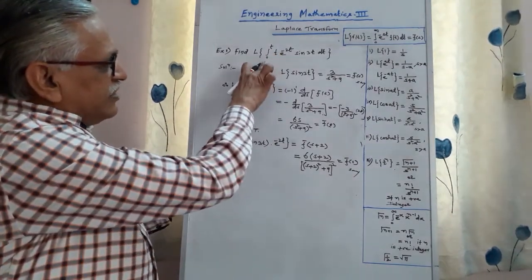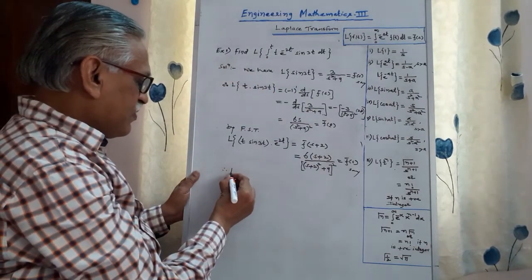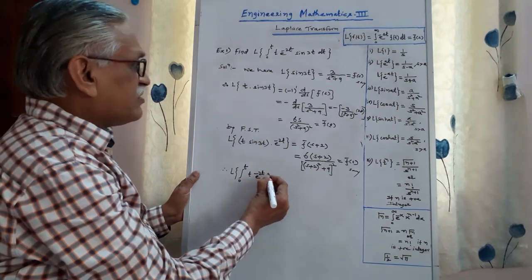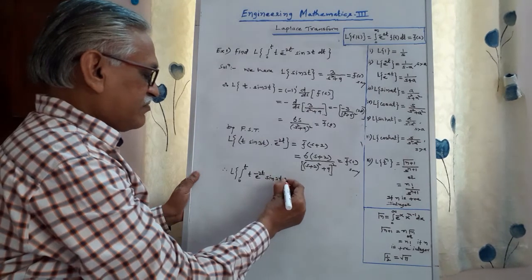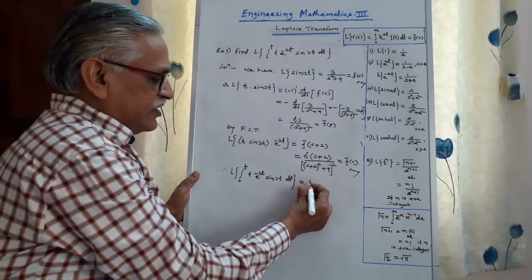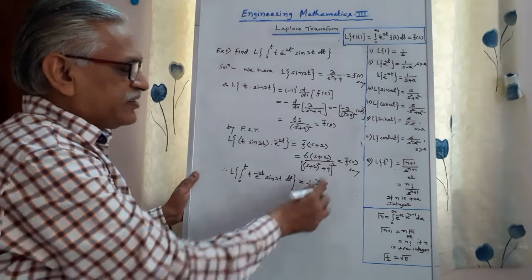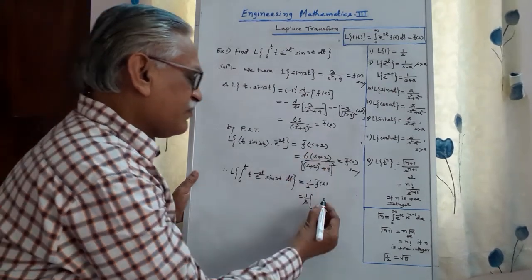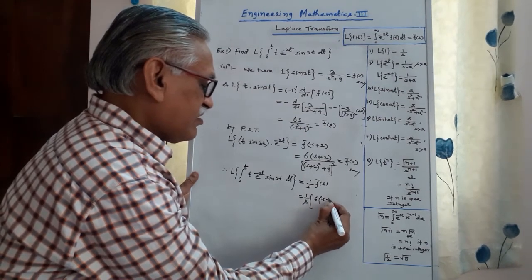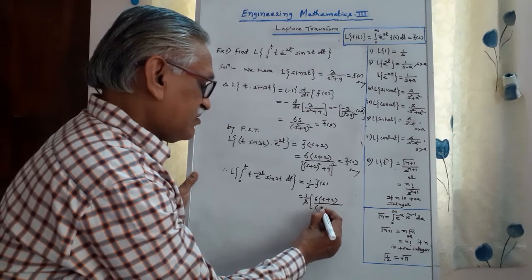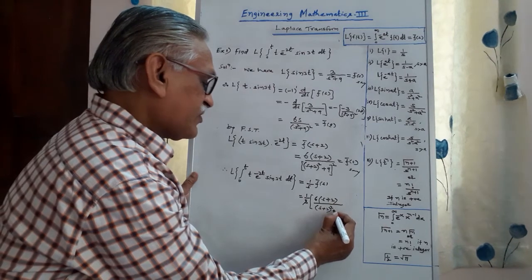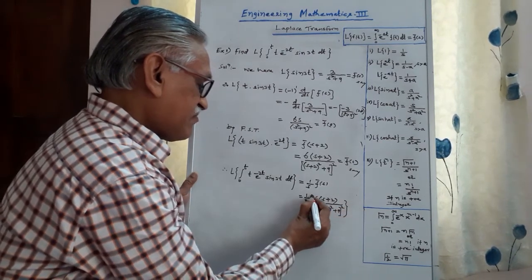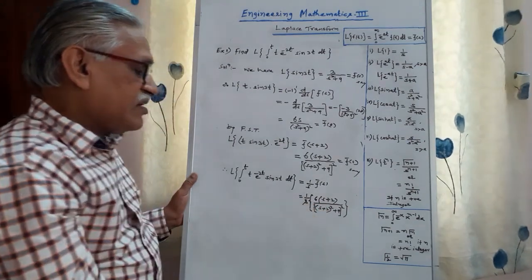Last step: apply the Laplace of integral theorem. Therefore, the Laplace transform of ∫₀ᵗ t·e^(−2t)·sin(3t) dt, as per the theorem, is (1/s)·f̄(s). So the answer is (1/s) times 6(s + 2) / ((s + 2)² + 9)². This is the required answer.